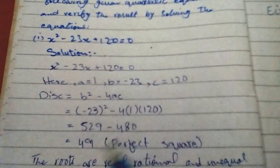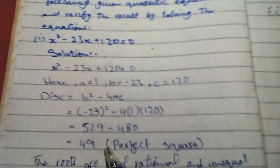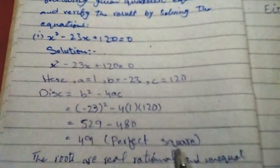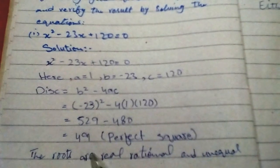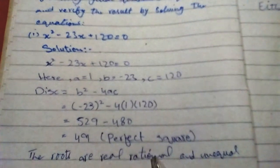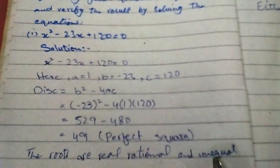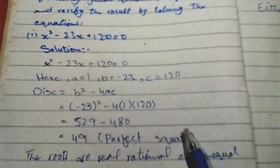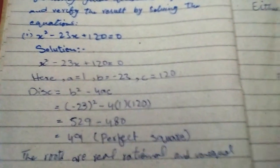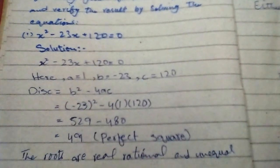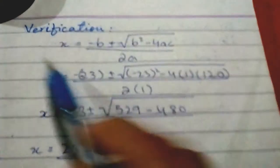The discriminant equals 49, which is a perfect square. Therefore the roots are rational and unequal. Now we will solve for the roots.